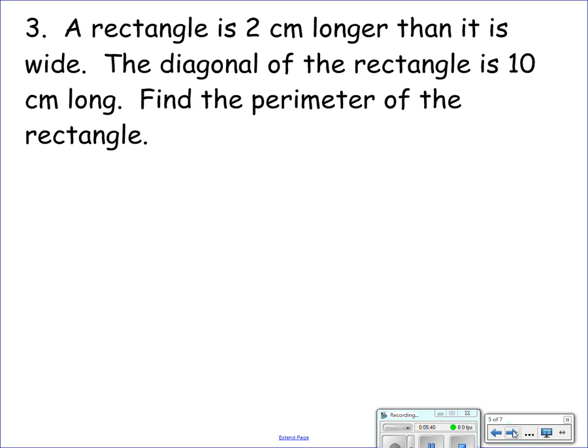The last example: A rectangle is 2 cm longer than it is wide. The diagonal of the rectangle is 10 cm long. Find the perimeter of the rectangle. So I have a rectangle. The rectangle is 2 centimeters longer than it is wide. So that's x, that's x plus 2. The diagonal is 10. Again, I have a right triangle happening there.